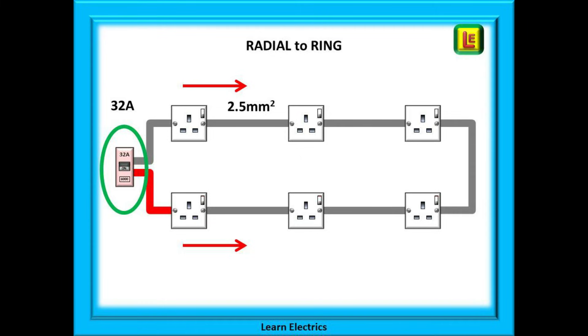By just extending the radial circuit by perhaps a meter or less to make a ring, we can reduce the cable size, use less copper and save money. And now you can see that current or electricity can flow in two directions around the circuit.